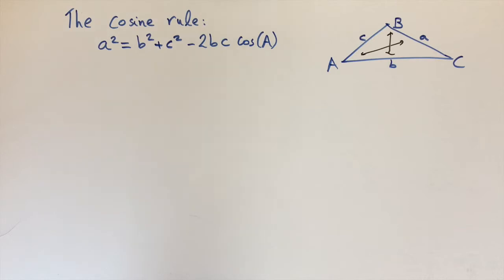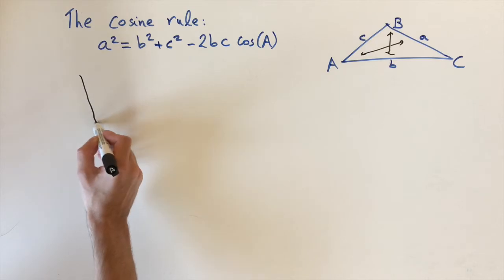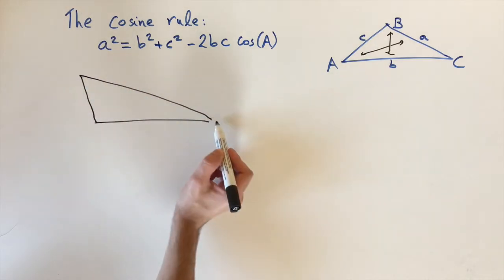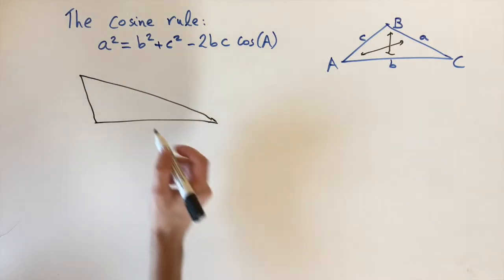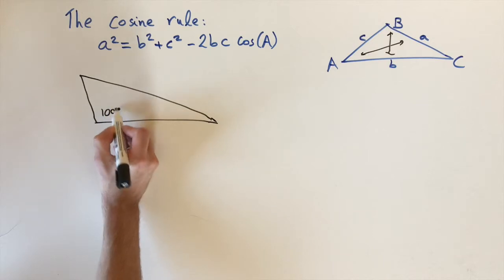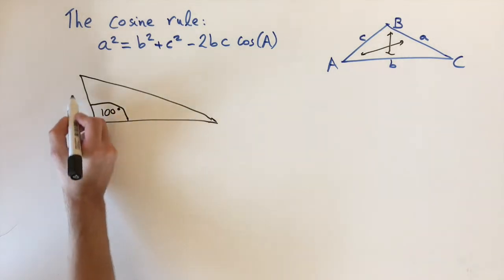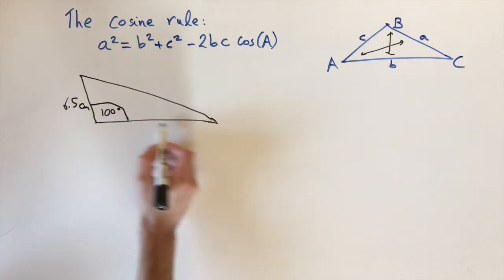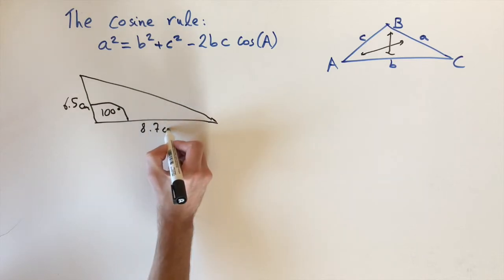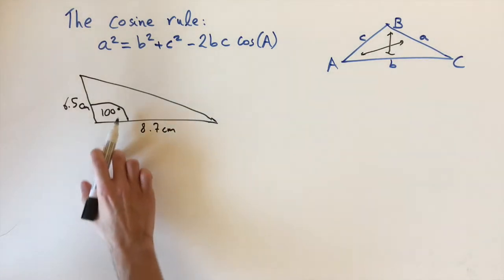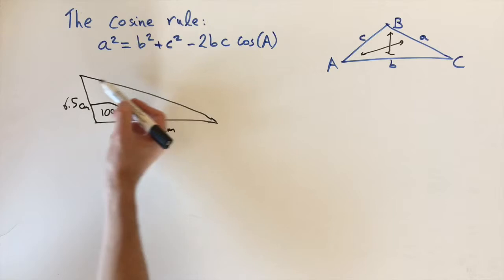We're going to look at two examples, one for each of those cases. For the first one, this triangle has an angle of 100 degrees, this length here is 6.5 centimeters, and the bottom one here is 8.7 centimeters. The problem is to find this missing length, the hypotenuse.